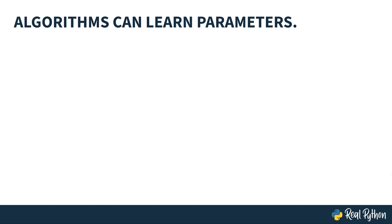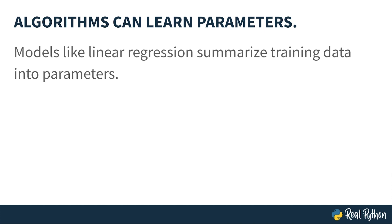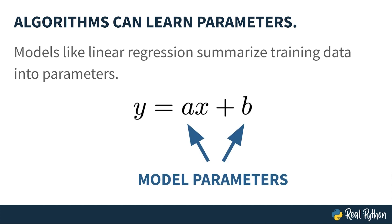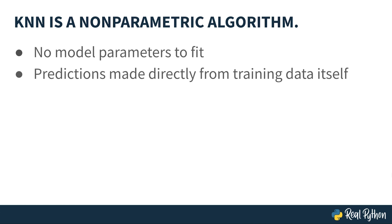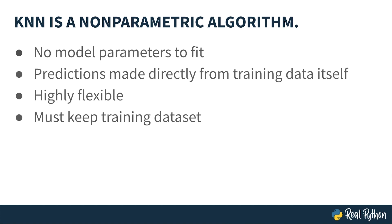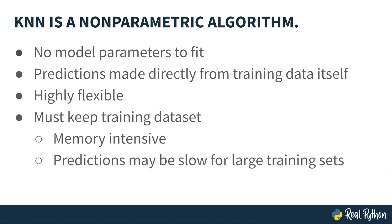Some machine learning algorithms work by learning model parameters. For example, linear regression models are built by finding the best parameters to summarize the training data. A simple linear regression model like y = ax + b has two model parameters, a and b, that are learned during the fitting phase and reused when making predictions. KNN, on the other hand, is a non-parametric algorithm — it does not have model parameters that need to be fitted during training. Predictions are made directly from the training data itself. However, a trained KNN model must retain the entire training set, which can be highly memory intensive and slow for large datasets.